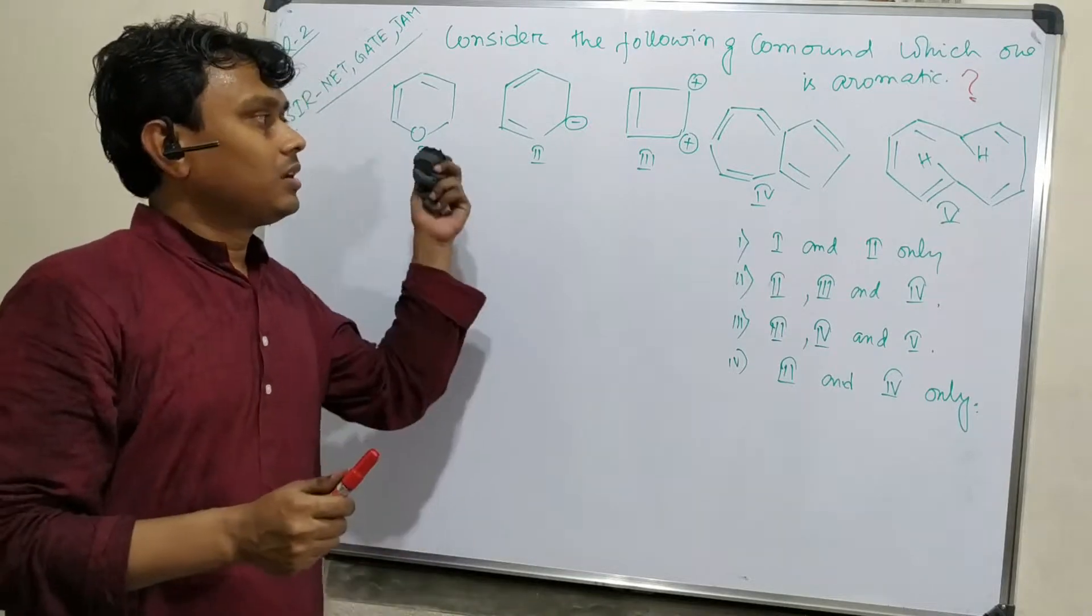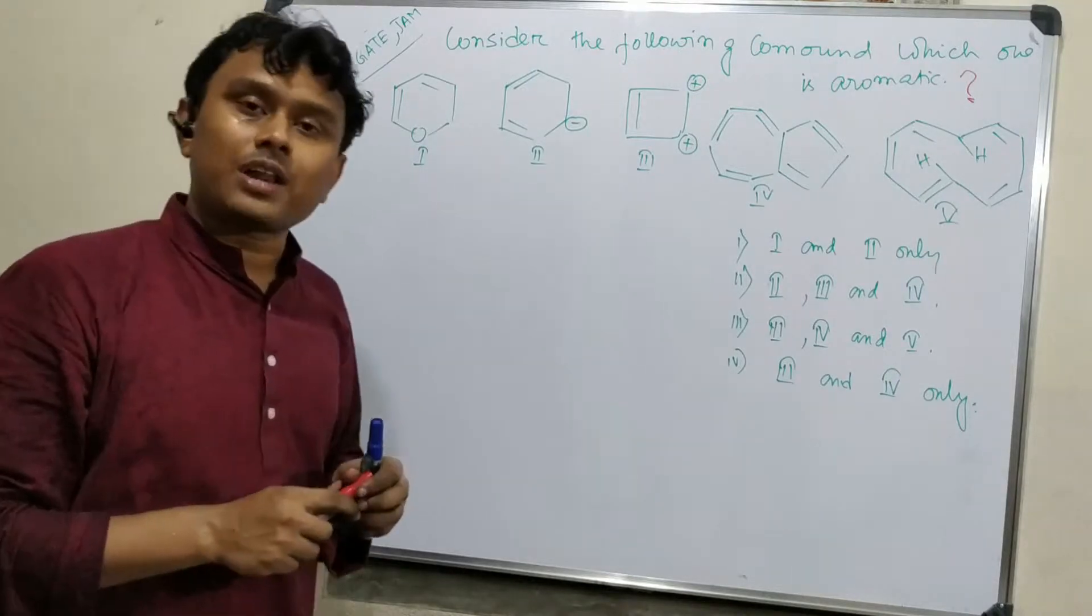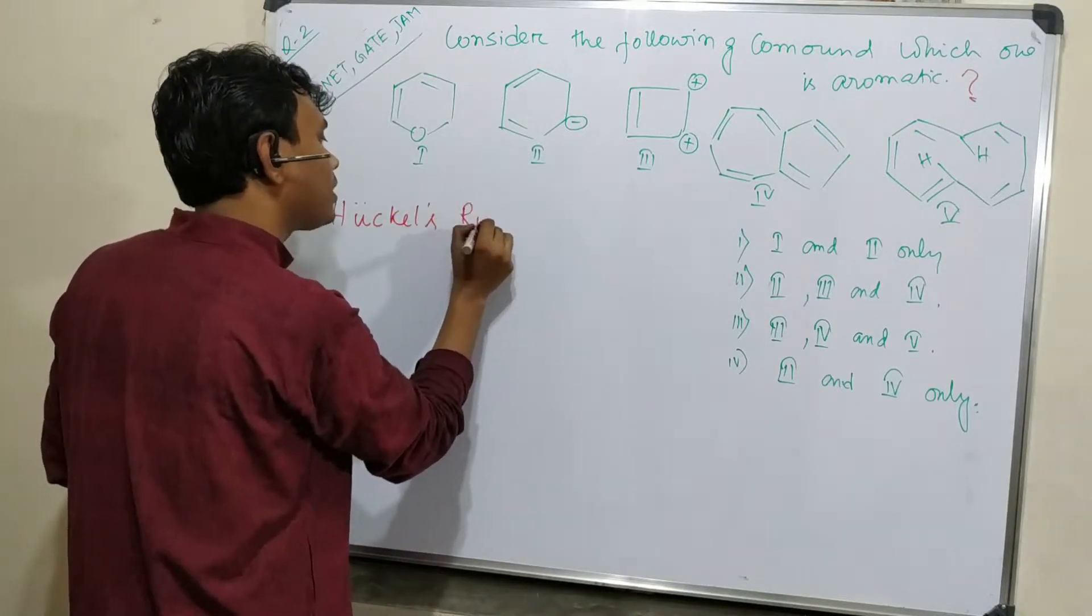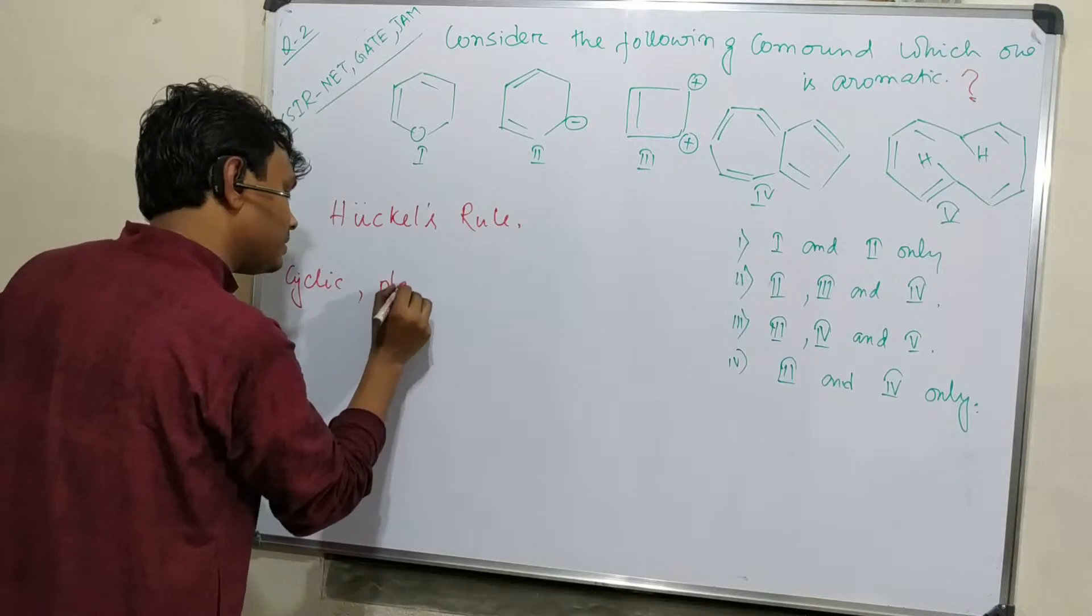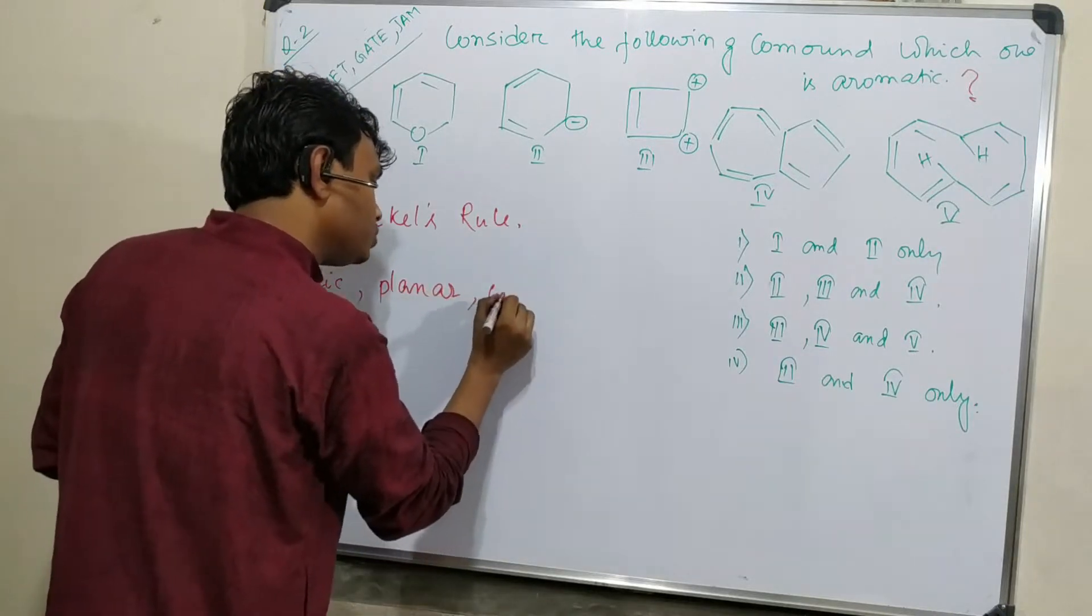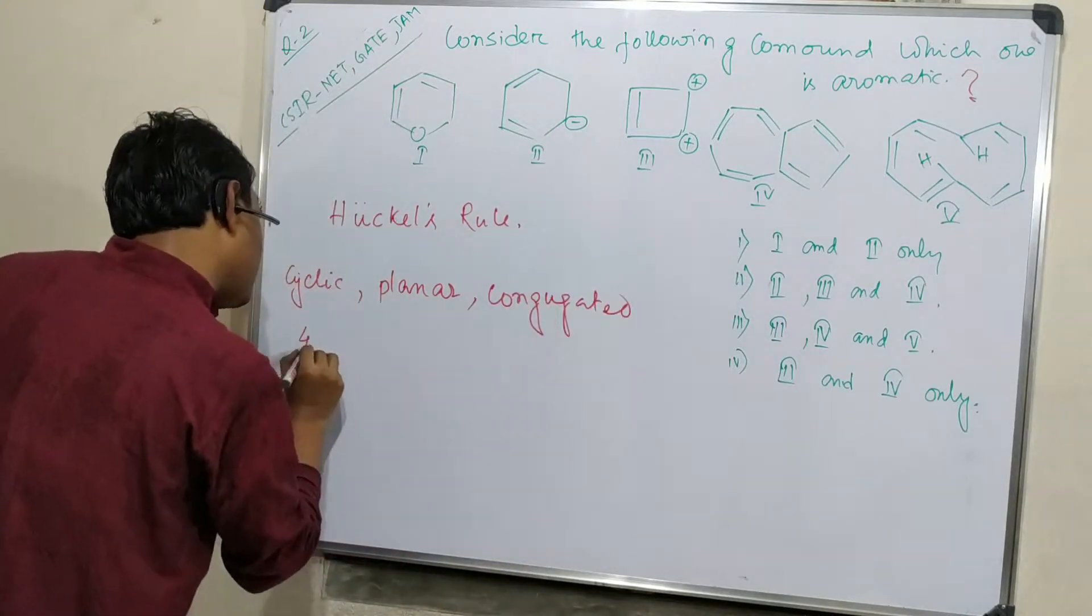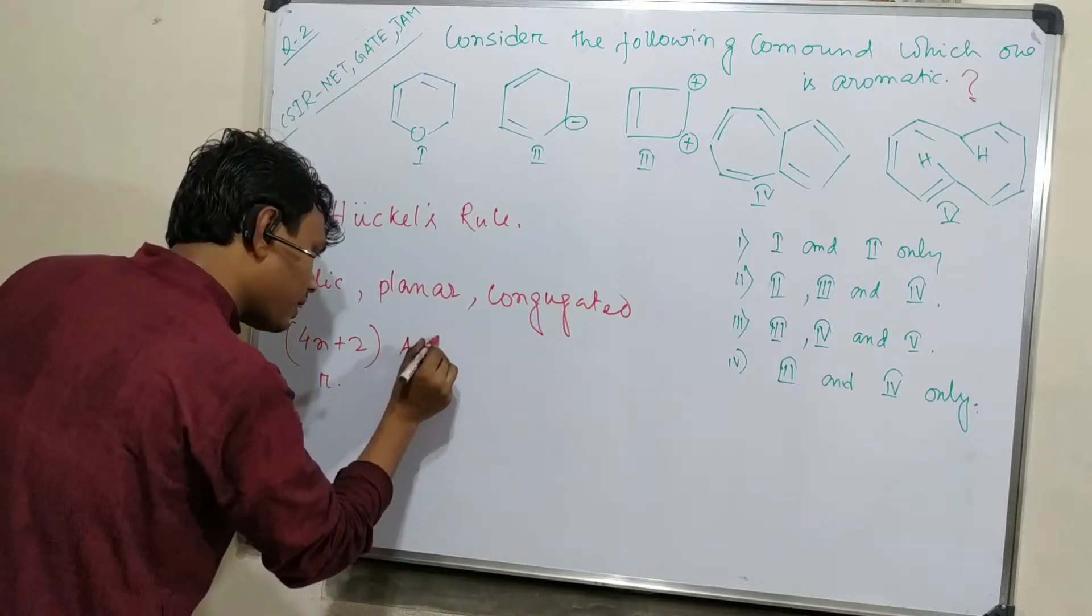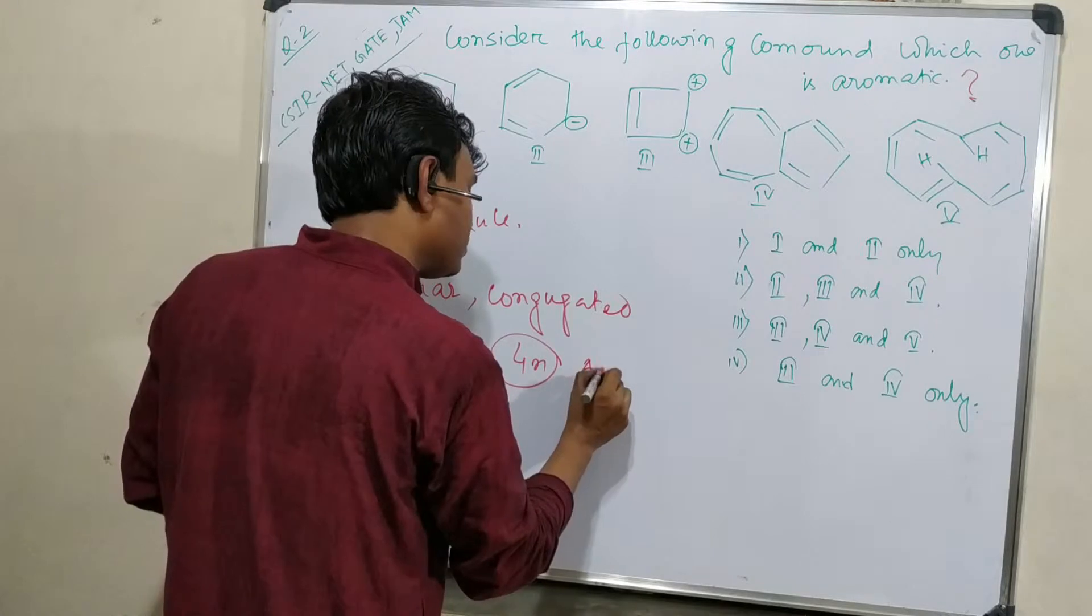Let's start. First of all, when I have a question about aromaticity, the first thing important to know is Huckel's rule. What Huckel's rule says: cyclic, planar, conjugated, and 4n plus 2 number of pi electrons for aromatic, and 4n number of electrons for anti-aromatic.